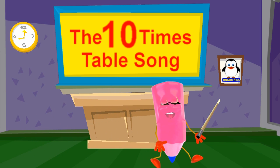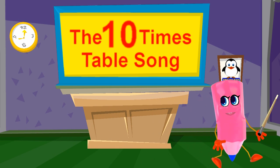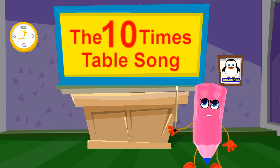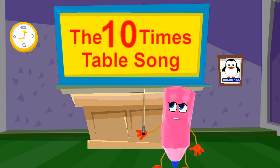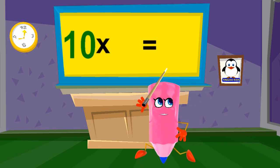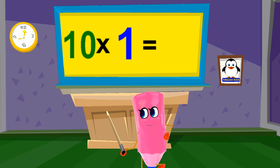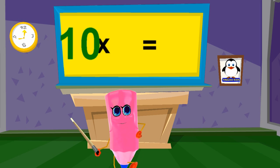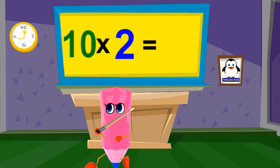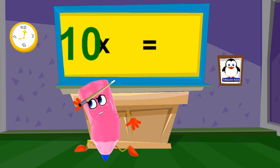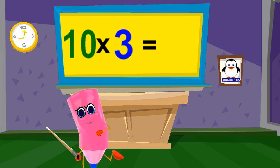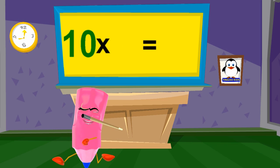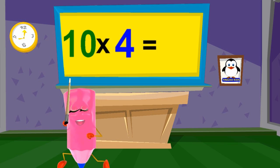The Ten Times Table Song. Ten times one is ten, ten times two is twenty, ten times three is thirty, ten times four is forty.